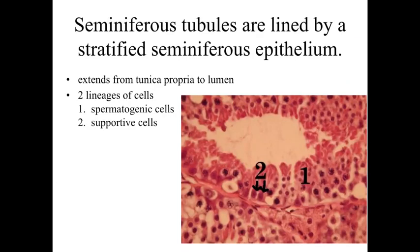At much higher magnification, what we're going to see within the testes is the seminiferous tubules. What we've got here is a lumen — that's the inside of the seminiferous tubule — and it's going to be lined by a very specialized epithelium referred to as a stratified seminiferous epithelium. We can see the lumen and many cell layers thick. We're going to have a basal lamina, and this region is going to be referred to as the tunica propria, which is essentially just the base layer found with this epithelium.